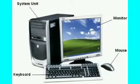Children, there are four main parts of a computer. They are monitor, keyboard, mouse, and CPU. Now let us revise about each part of a computer in detail.